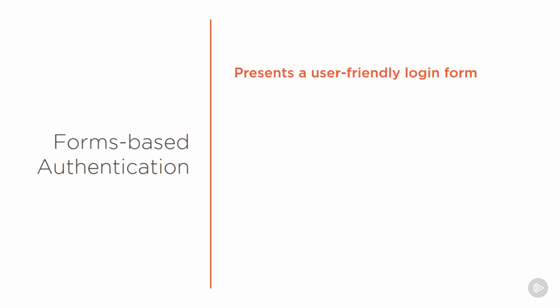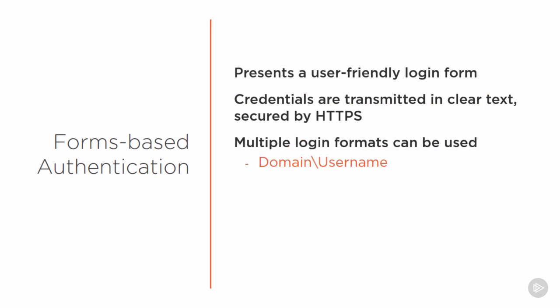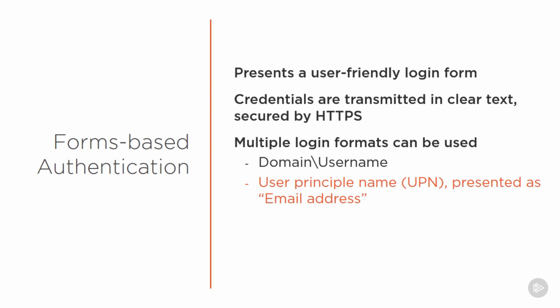Then there is forms-based authentication, which presents a user-friendly login form. The credentials are transmitted in clear text — filling out a form in the web browser — so this is secured by HTTPS. There are multiple login formats available: the familiar domain\username format, or the User Principal Name (UPN), which is presented as an email address on the login form. Using UPN is an argument for matching the UPN to the user's primary email address, so users only need to remember their email address and password.